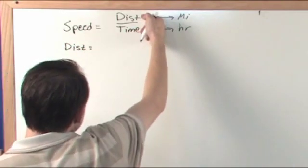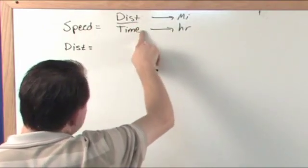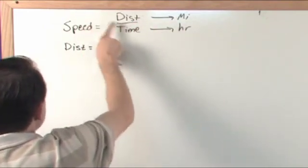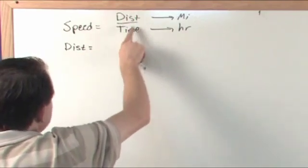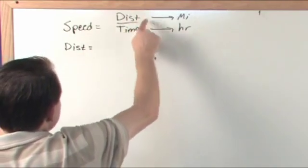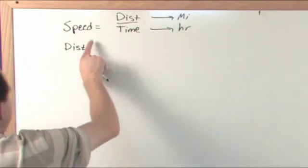It would cancel on this side—time on the bottom and time on the top. Time divided by time gives you one, but over here I'd have speed times time. So distance equals speed times time.